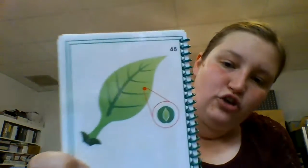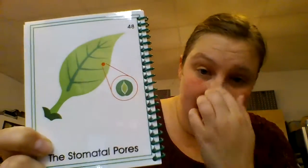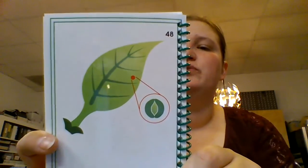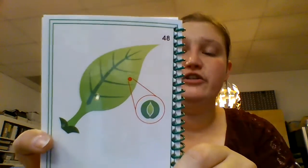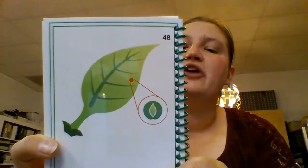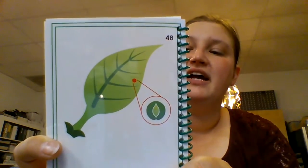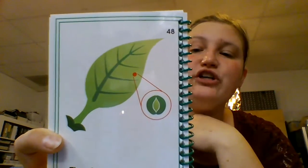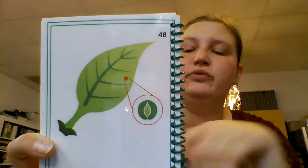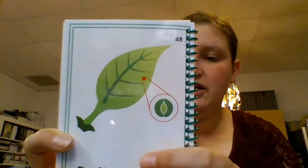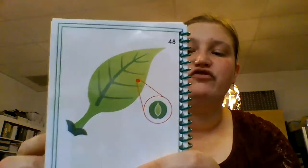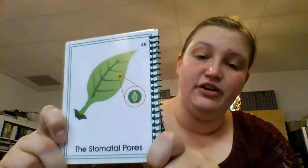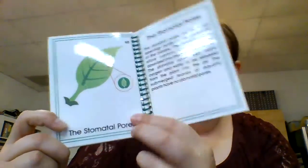Next we have the stomatal pores. Here's a magnification of what they look like. The stomatal pores are the small openings mostly on the underside of the blade. The stomatal pores allow carbon dioxide to be absorbed into the plant from the air. The stomatal pores also allow oxygen and water to be released from the plant into the air. The submerged leaves of aquatic plants have no stomatal pores.